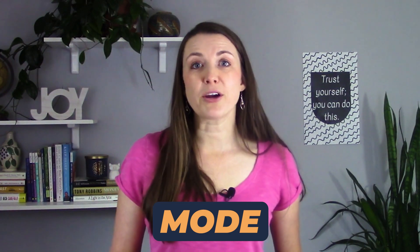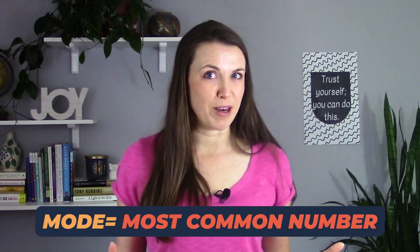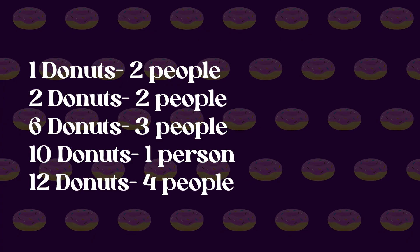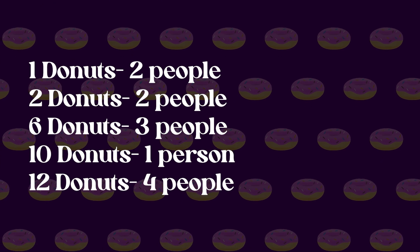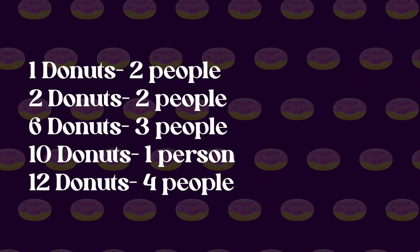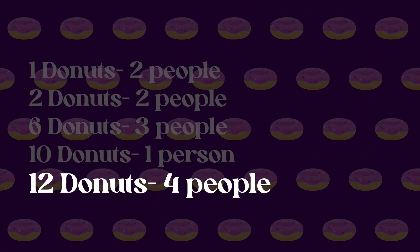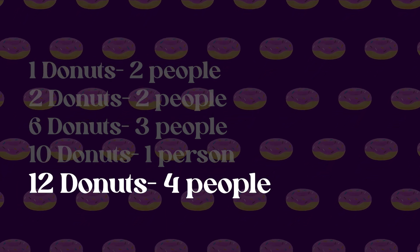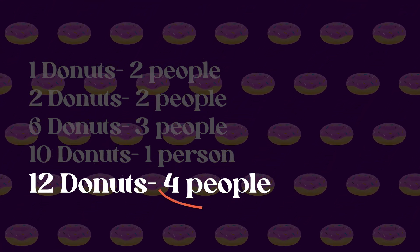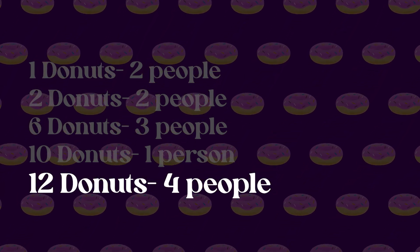Moving on to mode. Mode is the number that is most common. So let's take a look at our donut numbers. We get here 12 — 12 occurs the most. 12 happens four times. And so 12 is our mode.